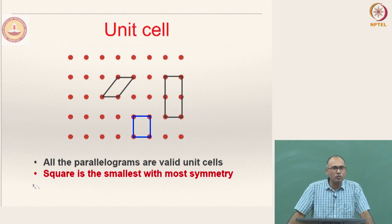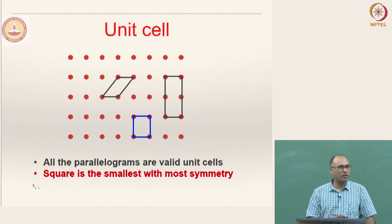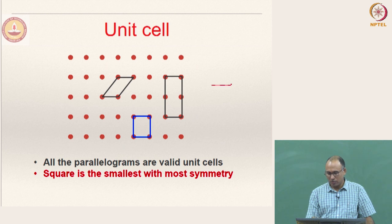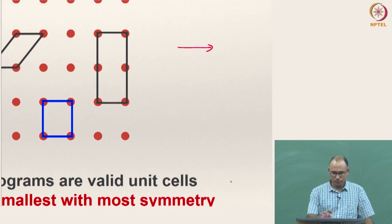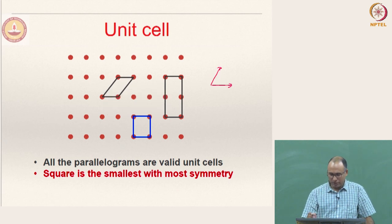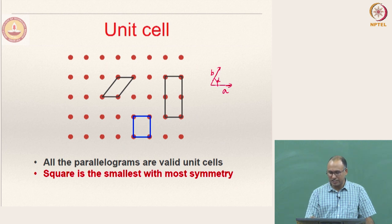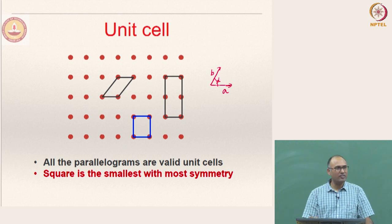The unit cell is defined as an entity which, when translated along the lattice vector or along the coordinate direction. For instance, in 2D the parameters required to describe a unit cell are: one vector in the x direction and another in the y direction — let's say vector A, with distance A and distance B, and the included angle alpha between them.